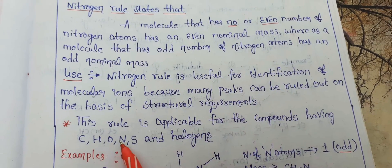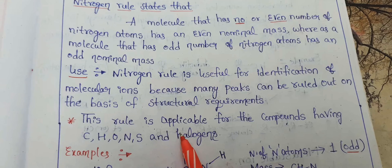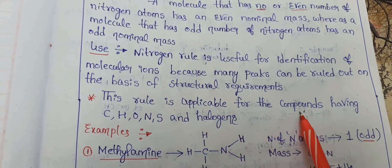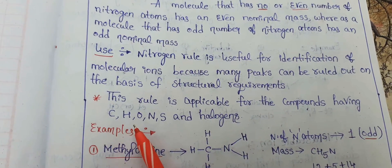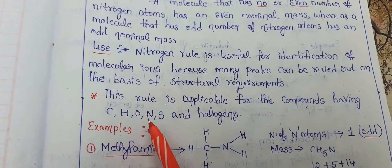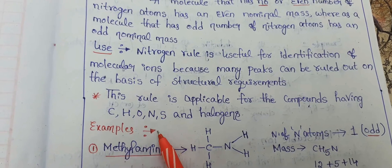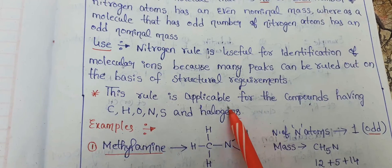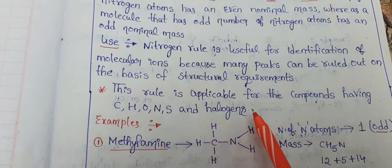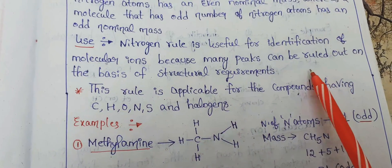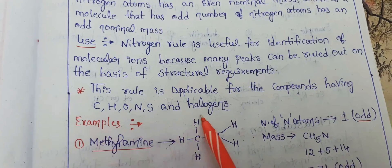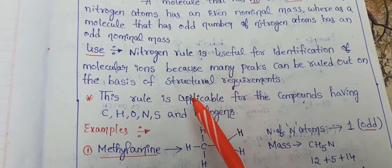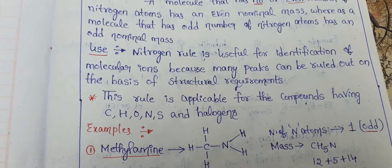This nitrogen rule is applicable for compounds containing carbon, hydrogen, oxygen, nitrogen, sulfur, and halogens. For compounds which have these atoms, the nitrogen rule is applicable.